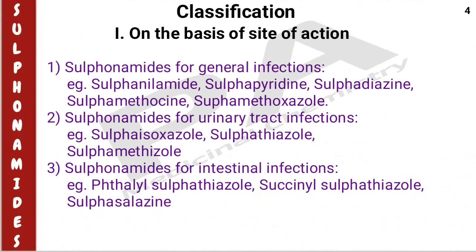Now we'll see the classification of sulfonamides. Based on the site of action, sulfonamides are classified into six types. The first type is sulfonamides for general infections — examples are sulfanilamide, sulfapyridine, sulfadiazine, sulfamethazine, and sulfamethoxazole. The second type is sulfonamides for urinary tract infections — examples are sulfisoxazole, sulfathiazole, and sulfamethoxazole.